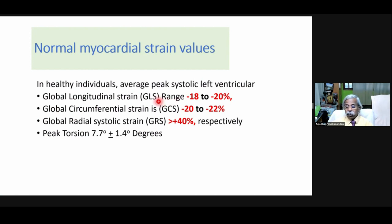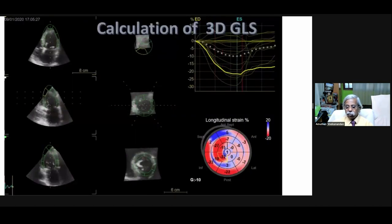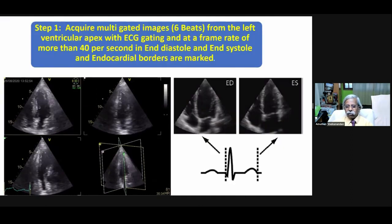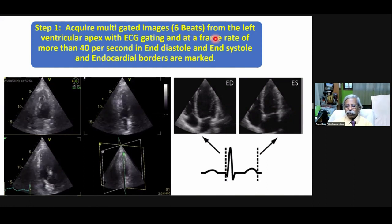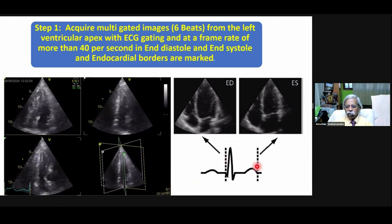The normal values are: global longitudinal strain GLS minus 18 to minus 20, global circumferential strain GCS minus 20 to minus 22, global radial strain GRS more than plus 40, and torsion rate approximately 7 degrees plus or minus 20. The advantages of 3D strain include temporal resolution of 34 to 50 volumes per second, area strain calculated simultaneously, dynamic bullseye map, and global strain calculation is simultaneous in all segments — which is not simultaneous in 2D. Additionally, there is no out-of-plane motion of speckles in 3D strain.